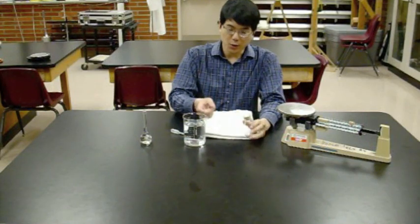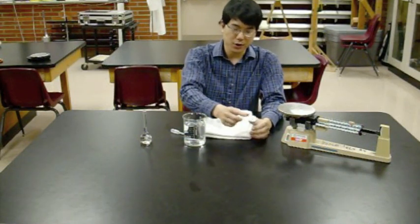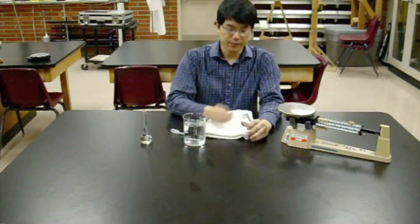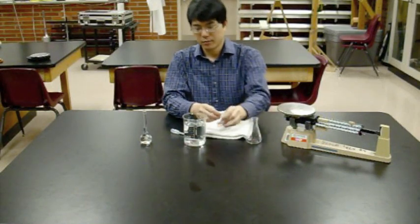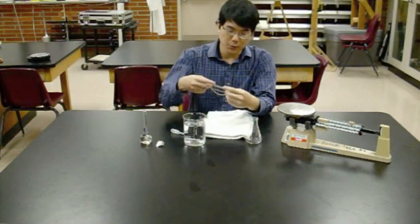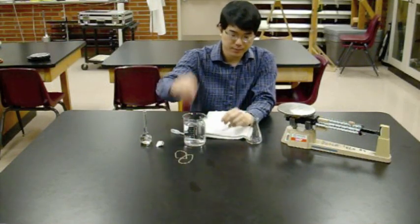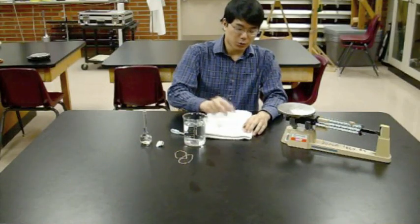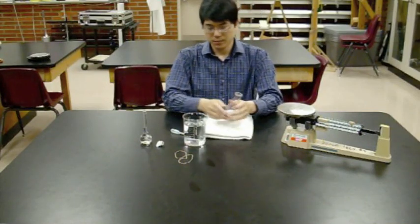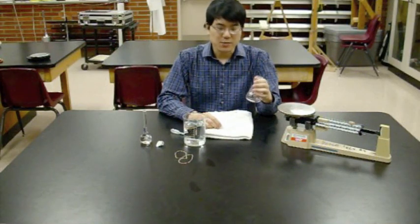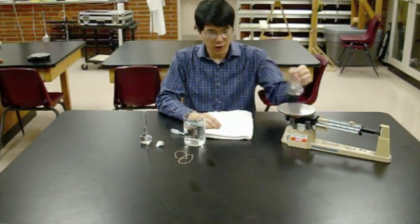First things first, you need to get water into here. So you need to take off that cap you put on in part one. Aluminum foil you can throw out. Try to keep the rubber bands if you can. Empty out any residual unknown.